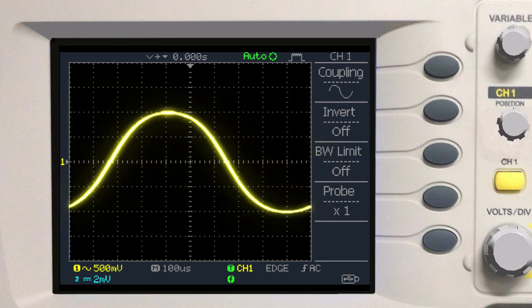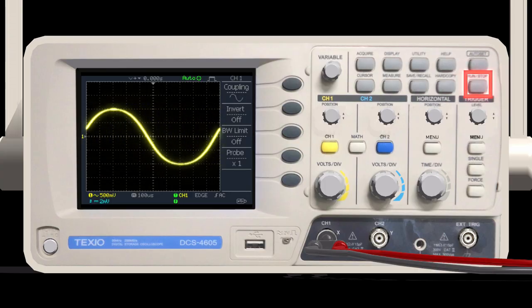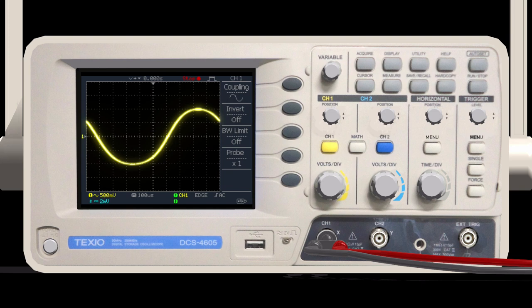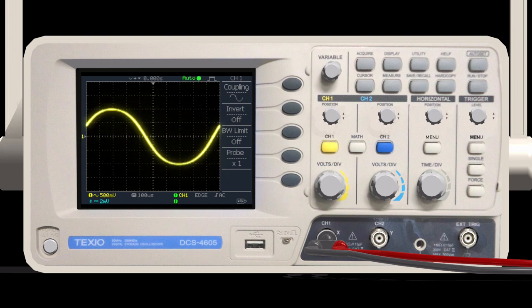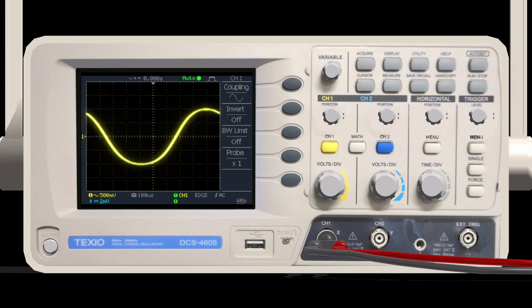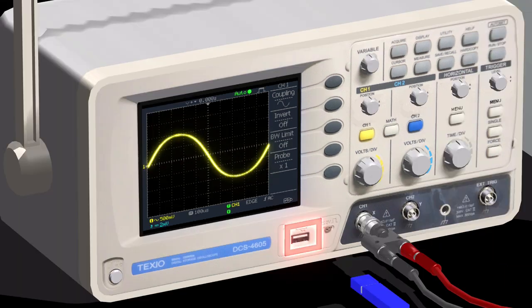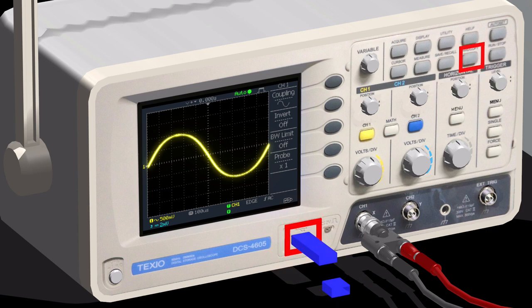If you want to stop the screen temporarily for observation, press the RUN STOP button. Press it again to start again. Insert a flash memory into the USB connector and press the HARD COPY button to save the waveform as an image.